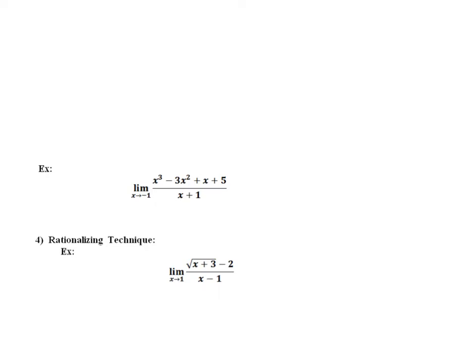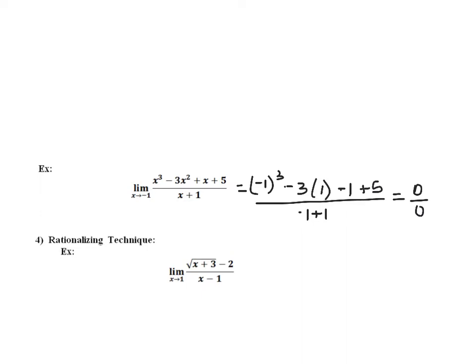Let's look at another limit: the limit as x approaches negative 1 of x cubed minus 3x squared plus x plus 5 over x plus 1. Doing direct substitution first — substituting negative 1 — we carefully calculate and see again that we get the indeterminate form 0 over 0. So we have to find a way of rewriting x cubed minus 3x squared plus x plus 5 divided by x plus 1 as an equivalent function at all but one point. We don't easily see a factorization, so another method would be division.